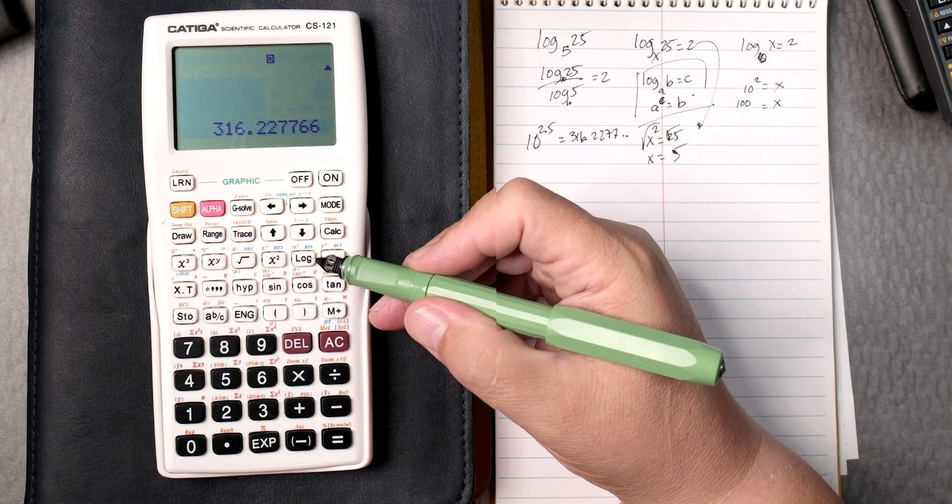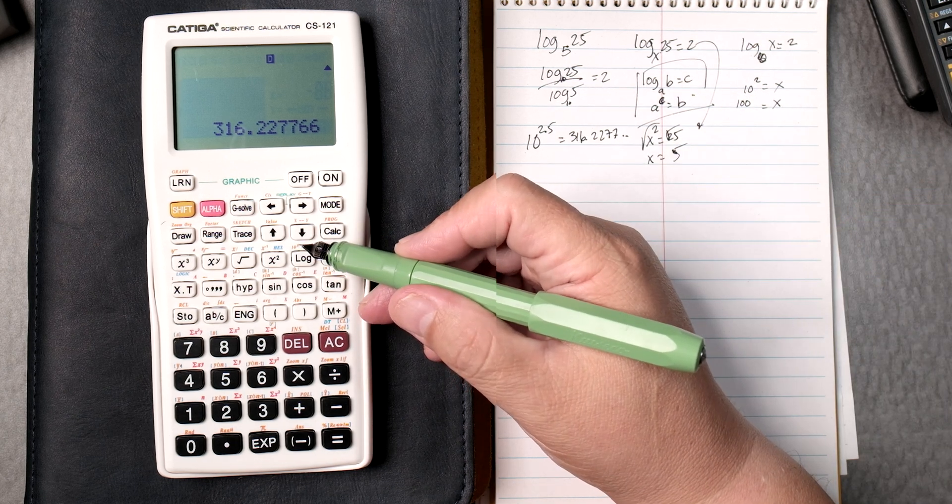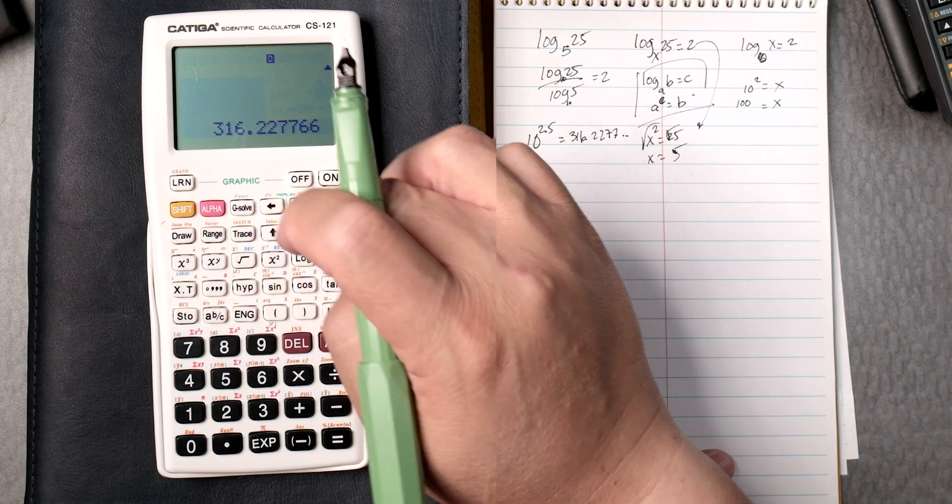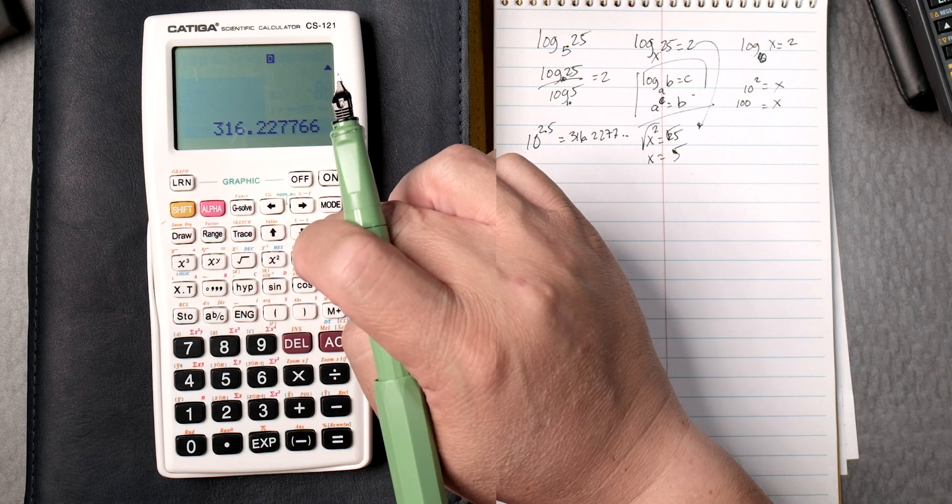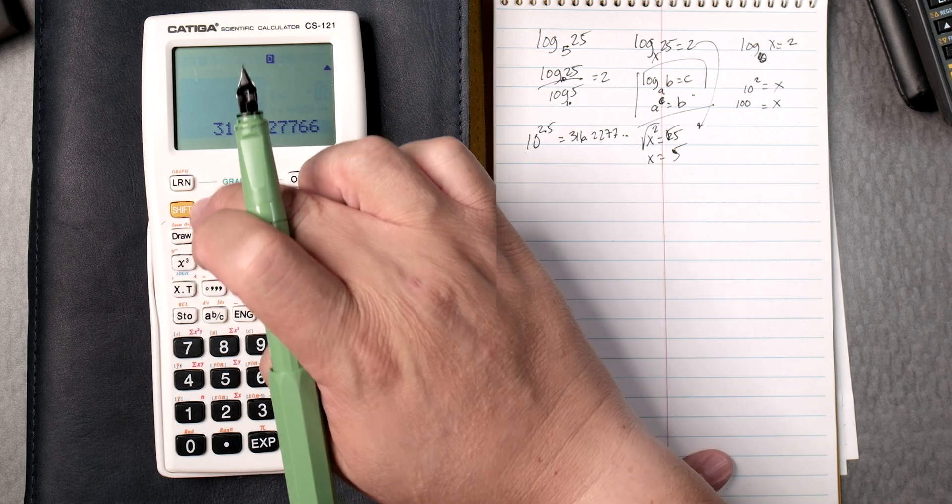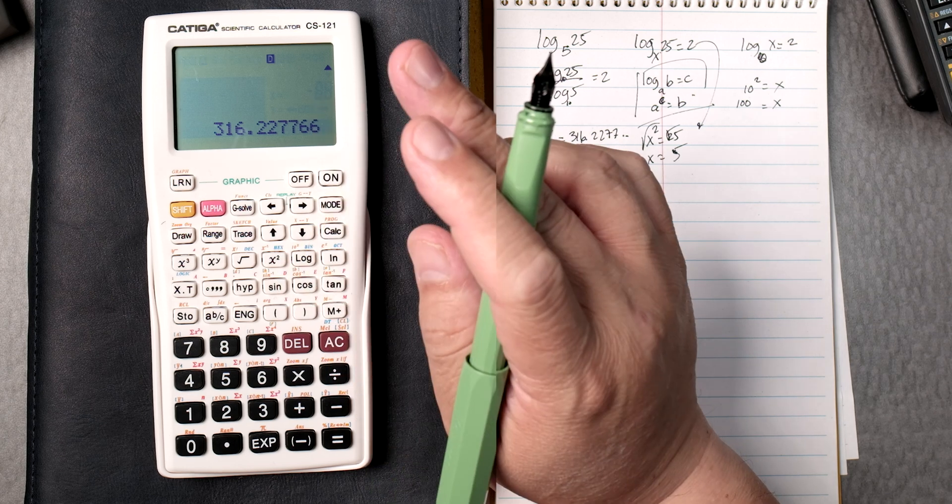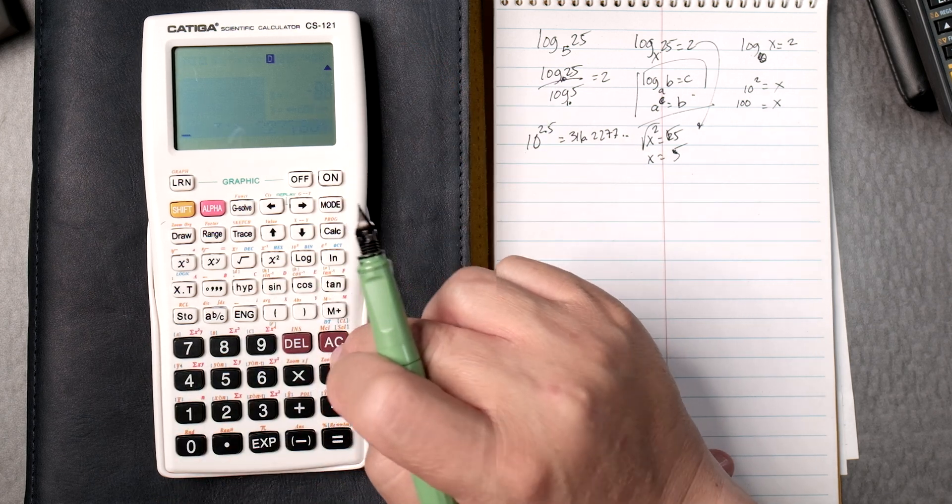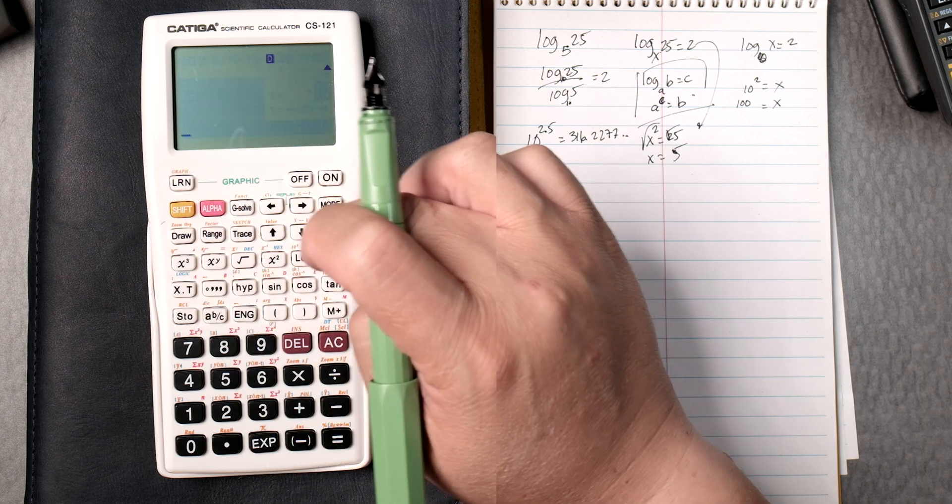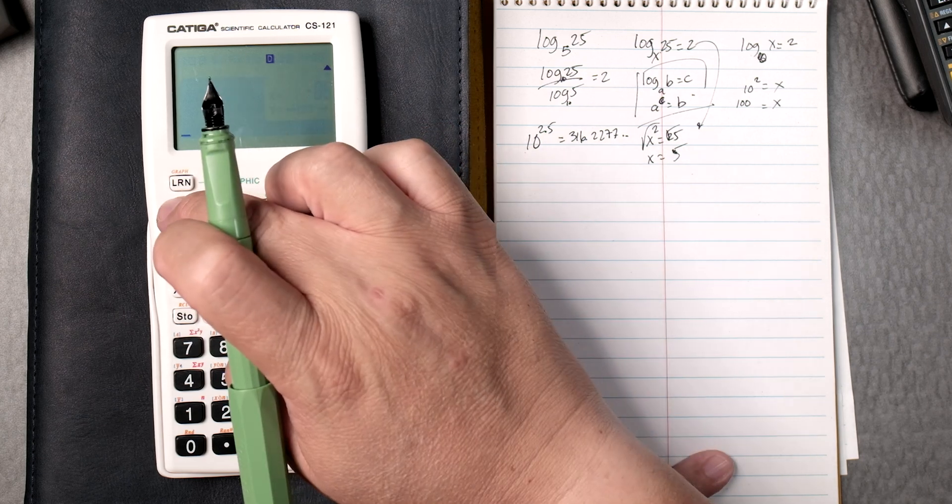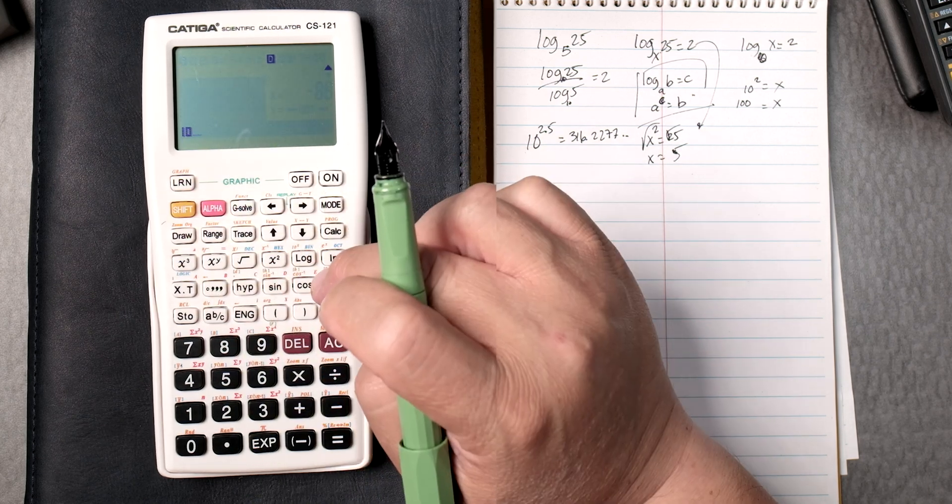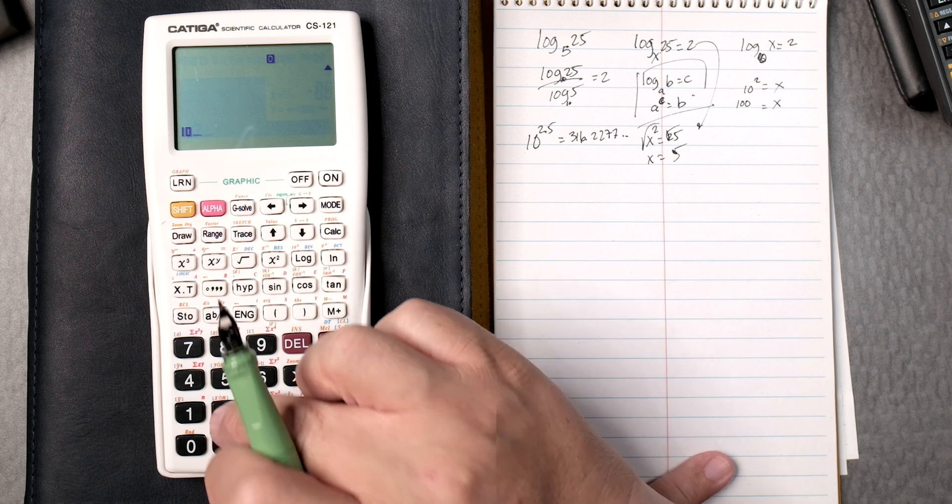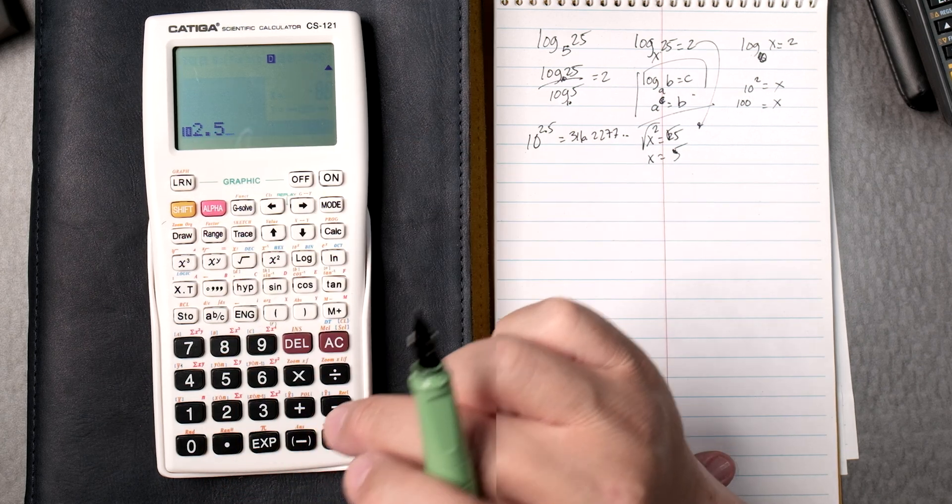Another way we can do it, if you look at the log key, in red there's 10 to the x. Let's see, I guess it would still be shift, shift 10, 10, 2.5.